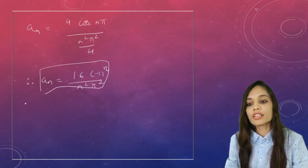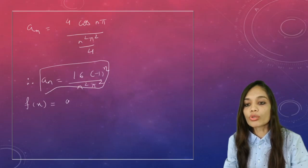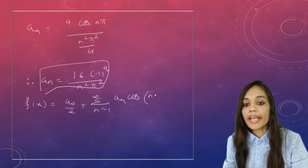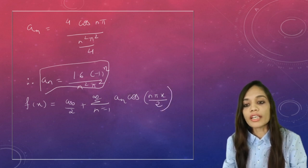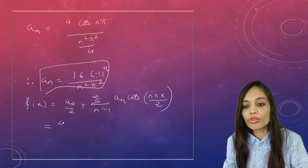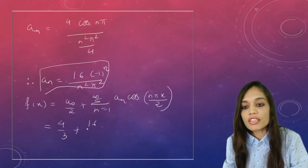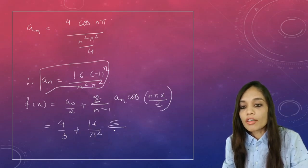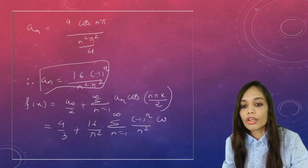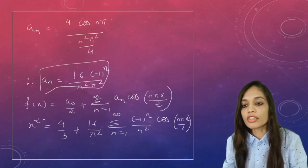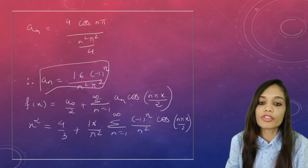Now let us write the Fourier series: f(x) = A0/2 + Σₙ₌₁^∞ An·cos(nπx/L), with L = 2. Substituting A0 = 8/3 and An = 16(−1)ⁿ/(n²π²), the Fourier series becomes f(x) = 4/3 + (16/π²)·Σₙ₌₁^∞ (−1)ⁿ/n² · cos(nπx/2). This is the required Fourier series of x² on (−2, 2).